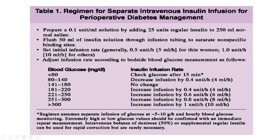First, prepare the insulin concentration: mix 25 units in 250 mL normal saline to achieve a concentration of 0.1 units per mL, or 1 unit per 10 mL. Before starting, flush 50 mL of the solution through the line to saturate binding sites.